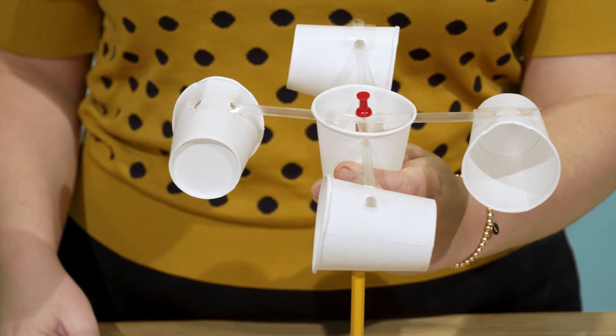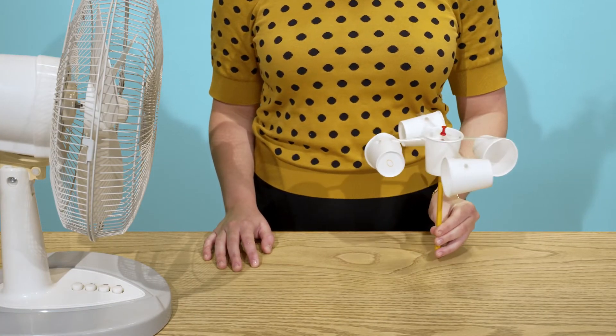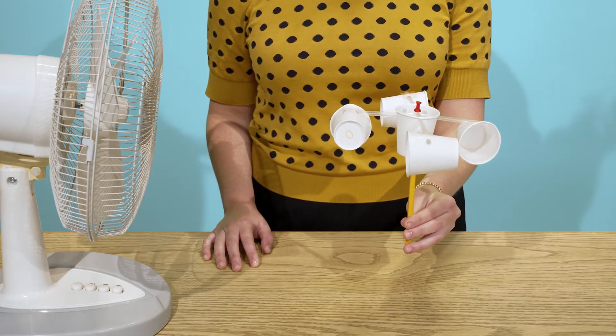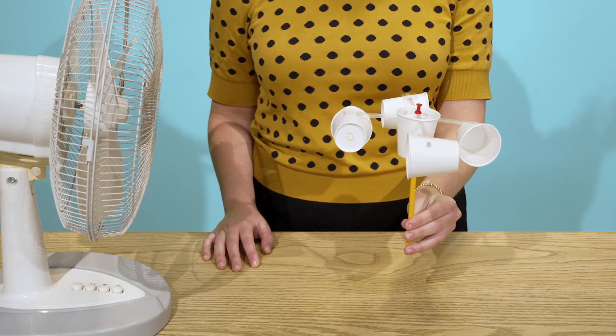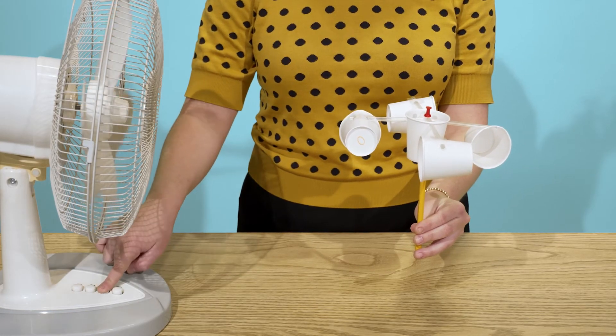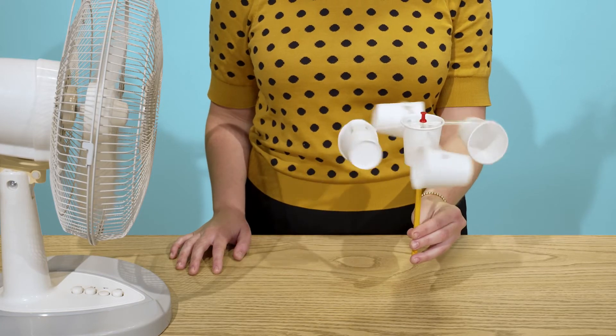You're now ready to measure the wind, so let's test your anemometer to make sure it's working properly. Stand about one foot in front of a fan, but stand to the side of the fan so you don't block any wind. Hold your anemometer by the pencil handle and reach it out so it's in front of the fan. Turn the fan on low and make sure your anemometer spins.